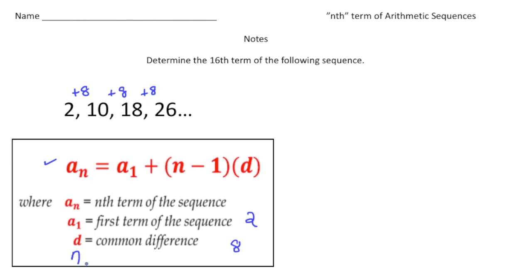For this one I want to figure out the 16th term of the sequence - what the 16th number would be if I kept adding 8. So for this one, n is going to be 16, and a sub n is going to be our answer.